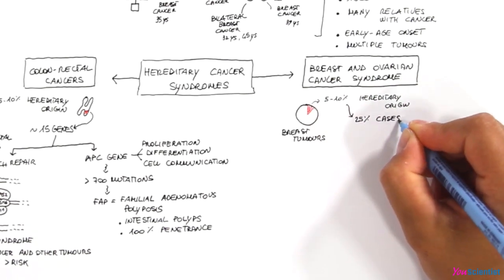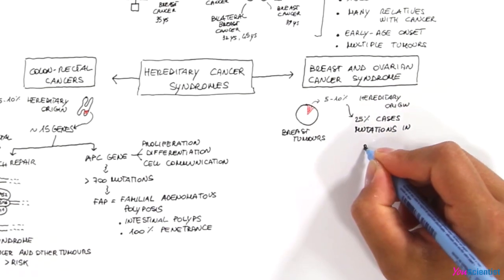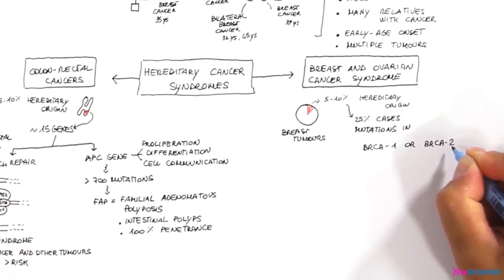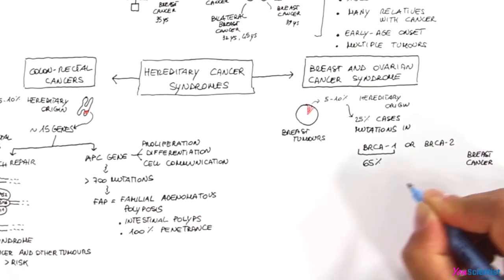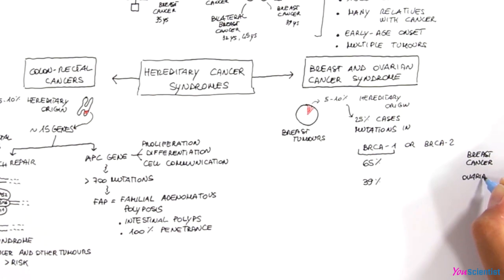Around 25% of those cases have mutations in BRCA1 or BRCA2 genes. People with mutations in BRCA1 have an increased lifetime risk of 65% to develop breast cancer and 39% to develop ovarian cancer.